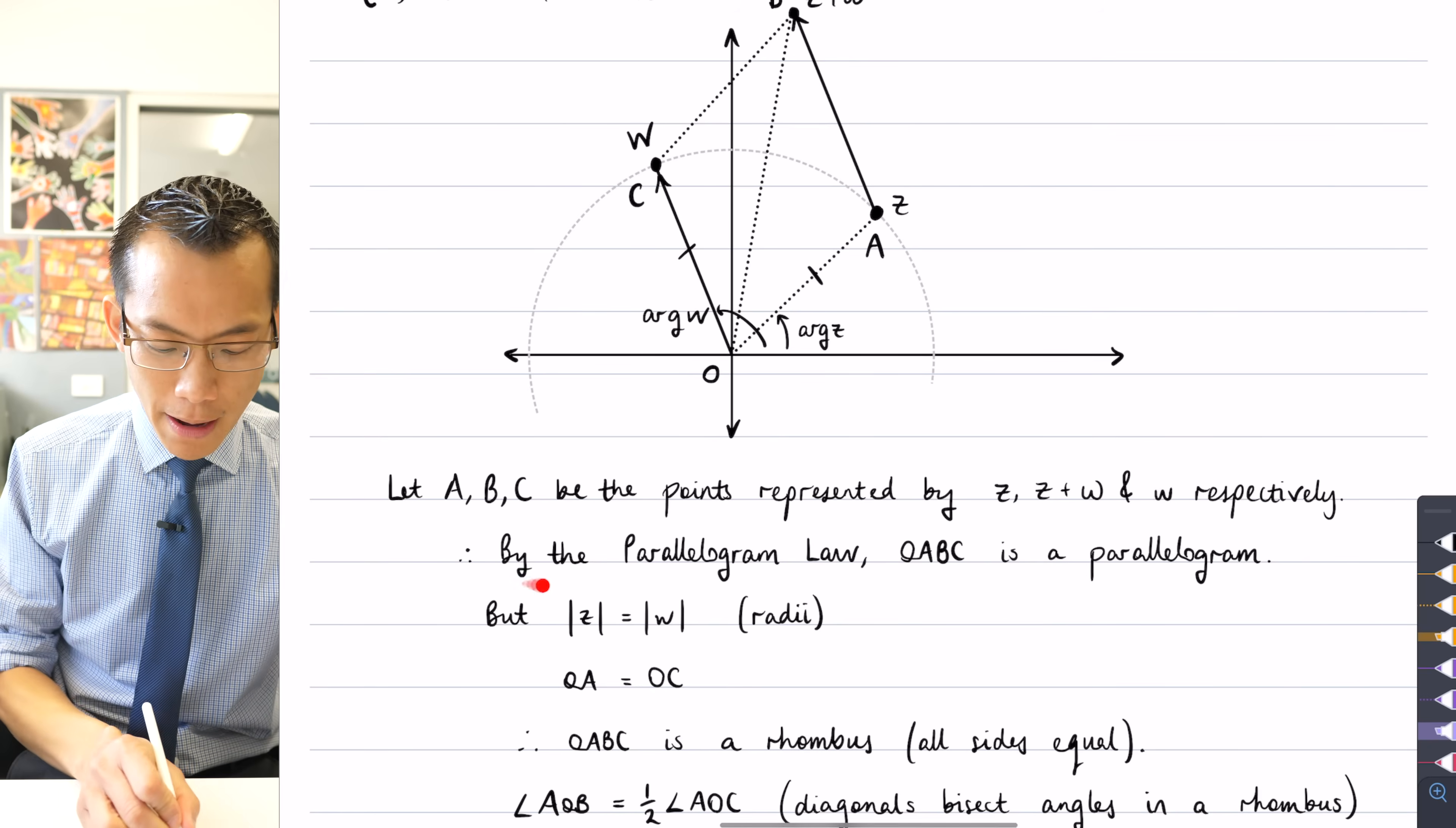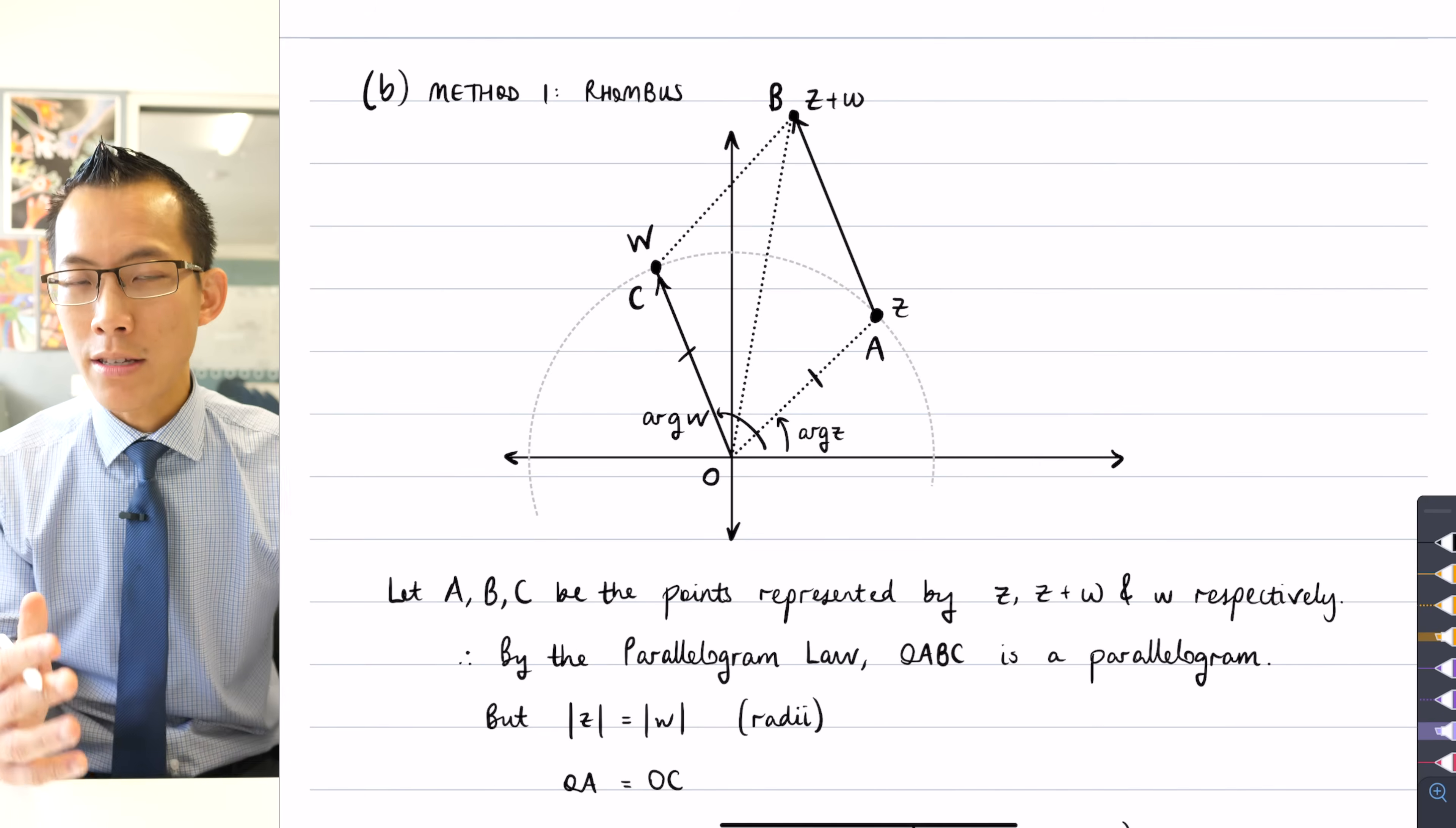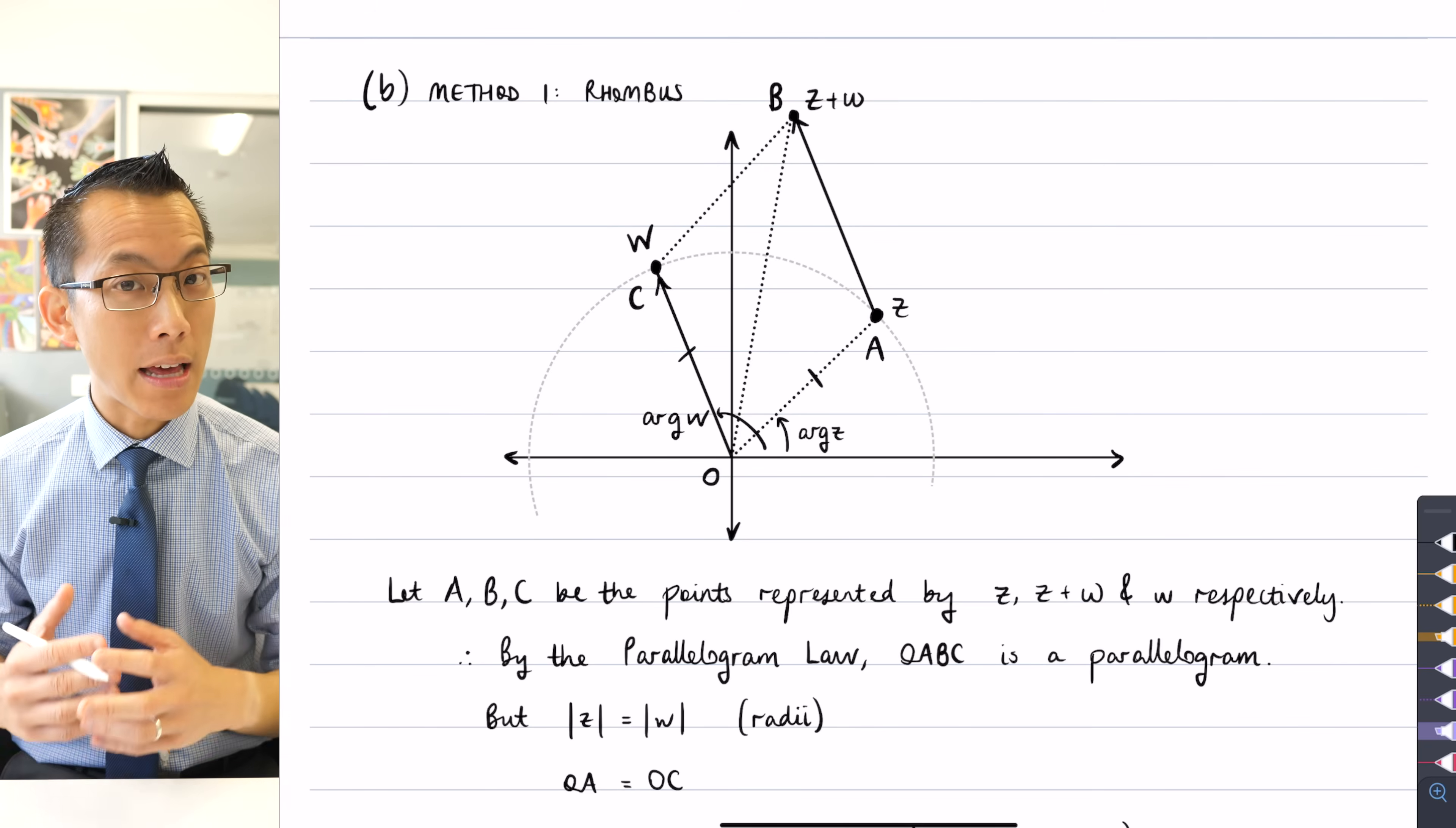So, you can see by the parallelogram law, I've got this parallelogram, I make the argument that I've got radii, which gives me the fact that it's a rhombus, because all the sides are equal, and the reason why I go towards having a rhombus, is because rhombuses, rhombi, however you say that, they have particular geometric properties that are useful to me.